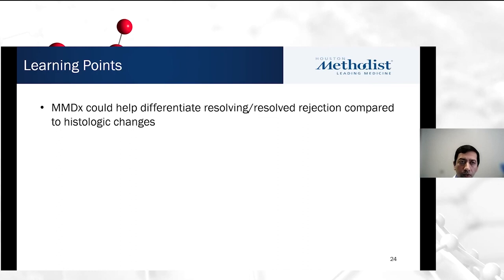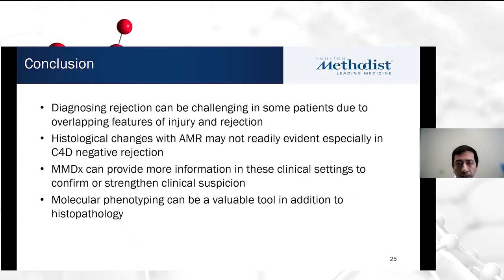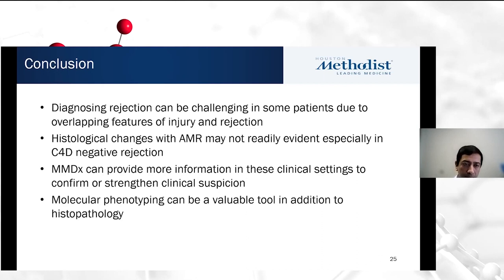In conclusion, all three cases illustrate that diagnosing rejection can be challenging due to overlapping features of injury and rejection. Histologic changes with AMR may not be readily evident, especially in patients with C4D-negative rejection. MMDX can provide more information in these clinical settings to confirm or strengthen clinical suspicions so we can act more definitively. Molecular phenotyping is a valuable additive tool to histopathology to take better care of our patients. With this, we conclude the webinar. Thank you very much.